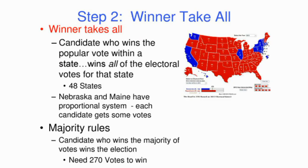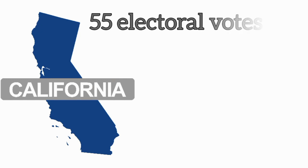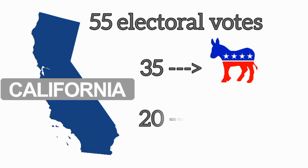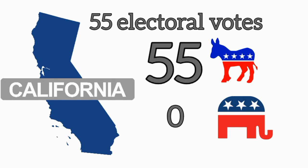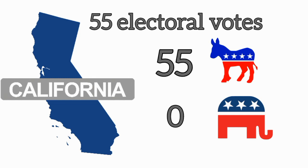All states except Maine and Nebraska apply the principle of winner-takes-all. For example, California has 55 electoral votes. If 35 supported Democrats and 20 supported Republicans, the Democratic candidate wins the state and takes all 55 electors, leaving the Republican candidate with none.